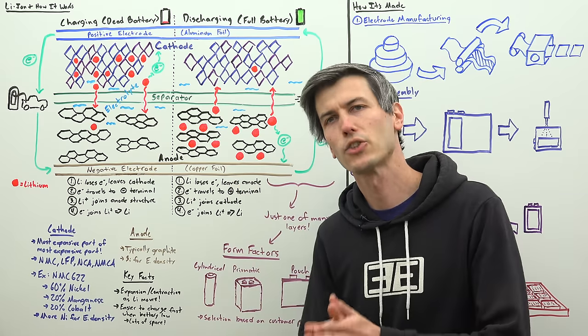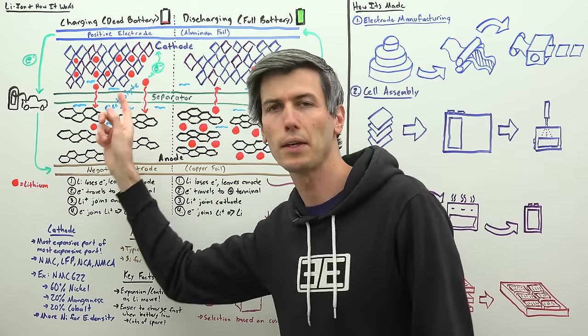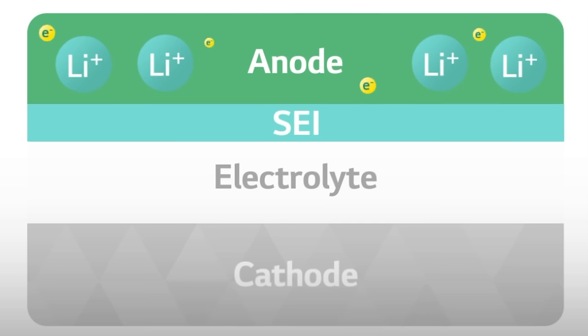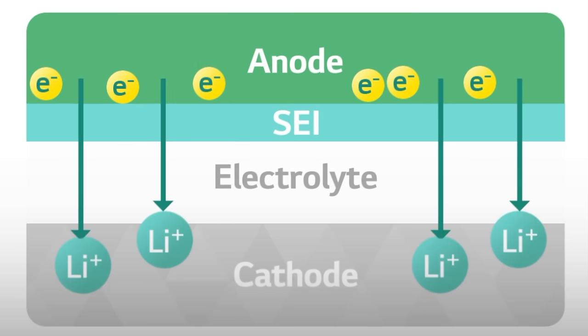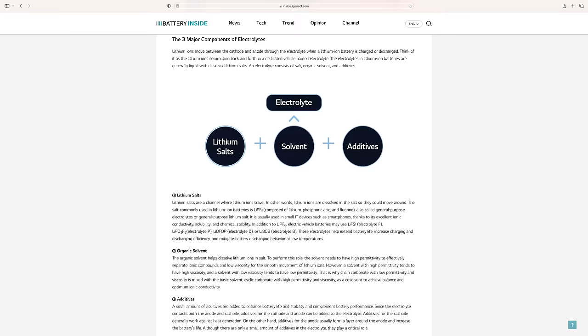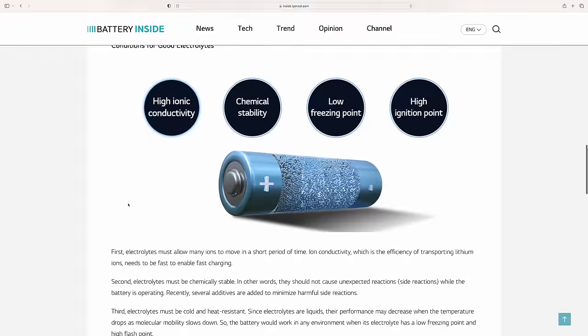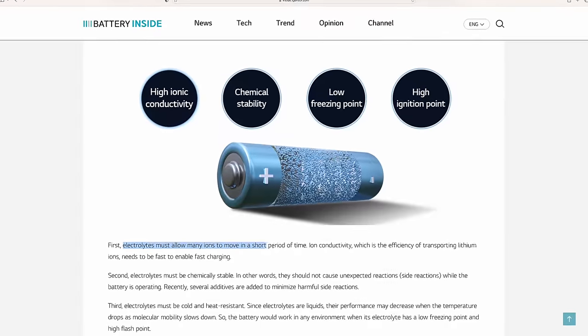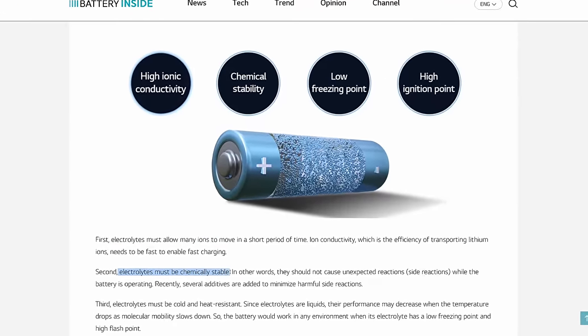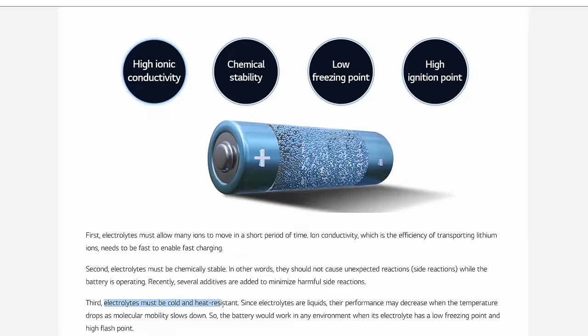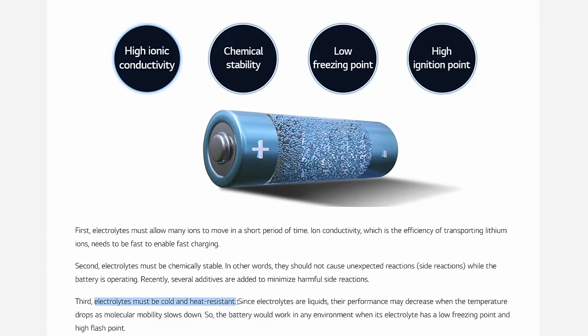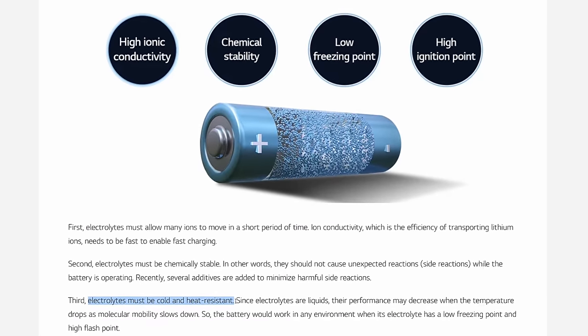Next, we have the electrolyte, which is typically a liquid in traditional lithium-ion batteries. This electrolyte is what allows the lithium ions to flow throughout the battery. Electrolytes are made up of lithium salts, solvents, and additives, and you want something that allows for lithium ions to travel easily, that doesn't react with other materials within the battery, with a low freezing point and a high ignition point, so that it's suitable for all kinds of environments.